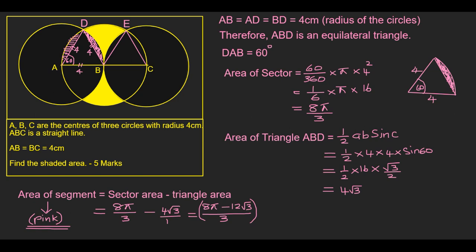Area of the triangle: you have to use the trigonometric equation, half a b sine C: half times 4 times 4 times sine 60. Sine 60, you need to memorize that exact trig value, root 3 over 2. If you simplify that one you get 4 root 3. Then area of the segment, which is the pink color highlighted part here, you need to take away the sector area, take away the triangle area. So I have shown here 8 pi over 3 minus 4 root 3 over 1. Take the denominator the same, 3, then you get 8 pi minus 12 root 3 over 3.